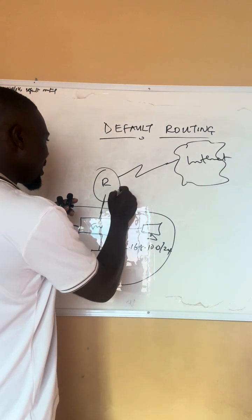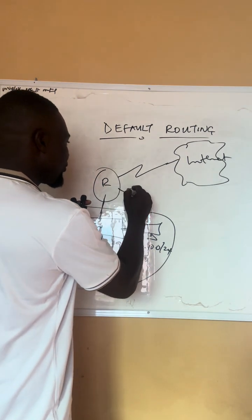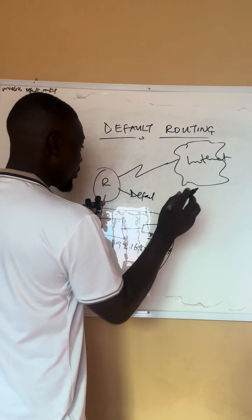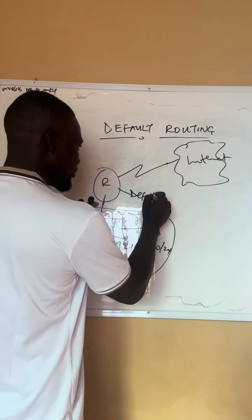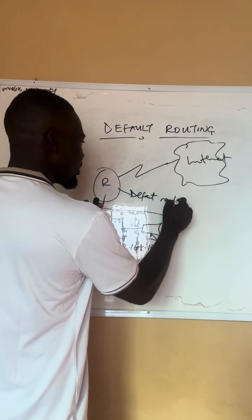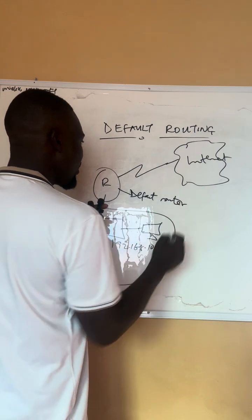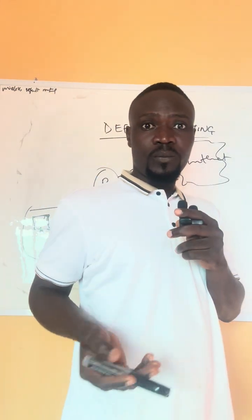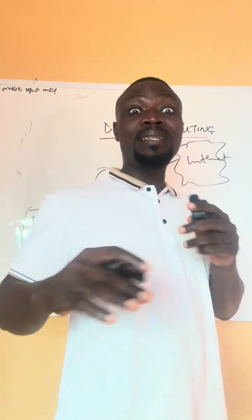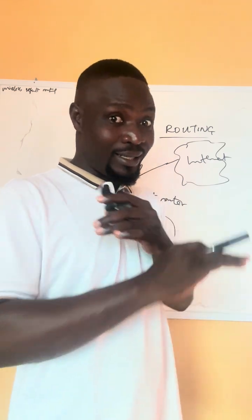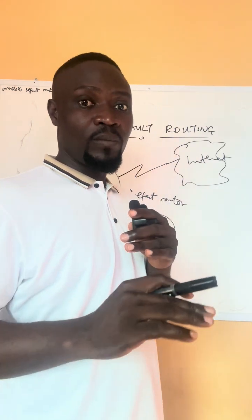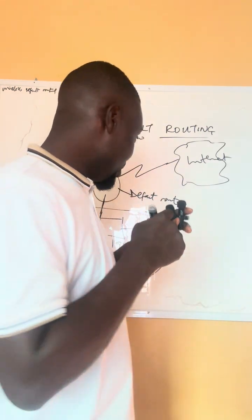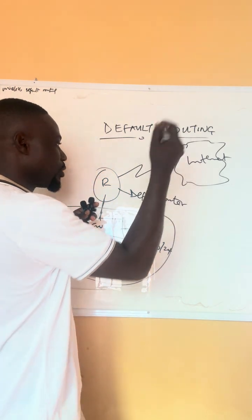For systems inside the organization to communicate, they are using these internal IP addresses. Now we can configure a default routing on this router: if you receive any traffic whereby the destination is unknown — you don't have the destination IP address in your routing table — then apply default routing.